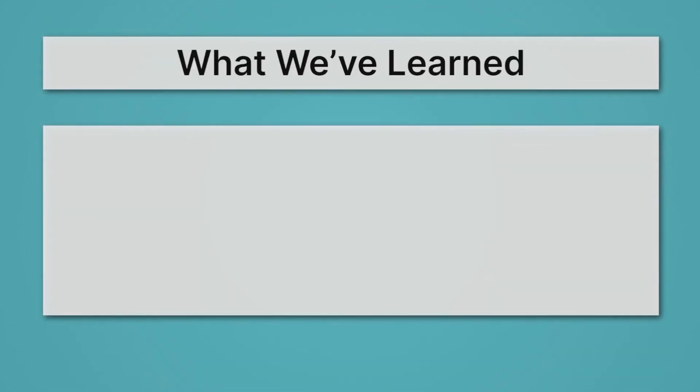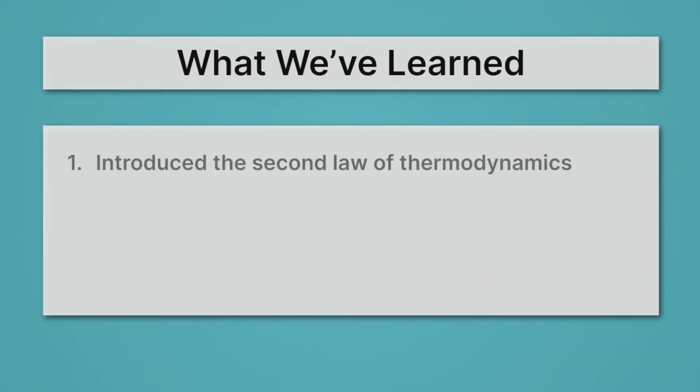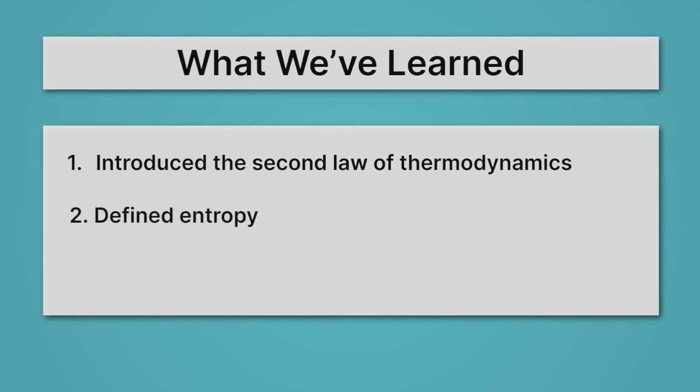Let's review what we've learned. First, we introduced the second law of thermodynamics, where we saw that it says the entropy of the universe is constantly increasing. Then we defined entropy — entropy is just a measure of disorder. The more disordered something is, the higher the entropy.